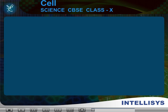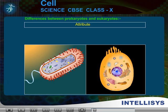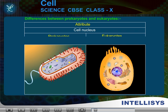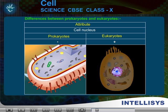Differences between prokaryotes and eukaryotes. Attribute: Cell nucleus. In prokaryotes, it is absent. In eukaryotes, it is present.